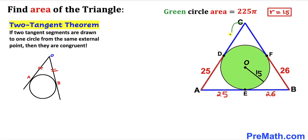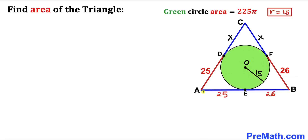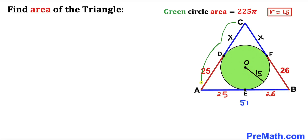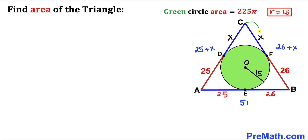Now let's focus on segment CD. Let's label it as x. Then segment CF is also x units, by the two tangent theorem. Observing the side lengths: AB = AE + EB = 25 + 26 = 51 units. Side AC = 25 + x, and side BC = 26 + x.